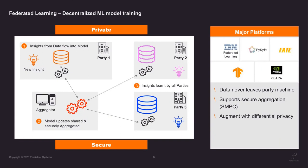There's also secure aggregation — a technique under secure multi-party computation — where multiple parties can share their model updates without each other knowing what the others sent. Even the aggregator won't know what update came from which party. So you can securely share updates from multiple parties and aggregate them to form your central machine learning model.